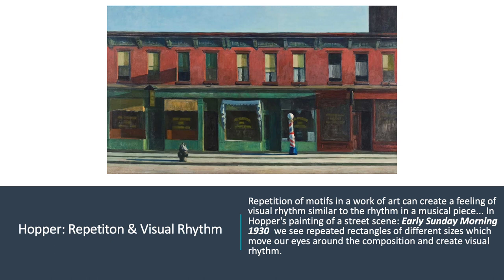Hopper: Repetition and visual rhythm. Repetition of motifs in a work of art can create a feeling of visual rhythm similar to the rhythm in a musical piece. In Hopper's painting of a street scene, 'Early Sunday Morning' (1930), we see repeated rectangles of different sizes which move our eyes around the composition and create visual rhythm. You also see repetition of color — the complements of red and green — and this would be an example of an irregular pattern.